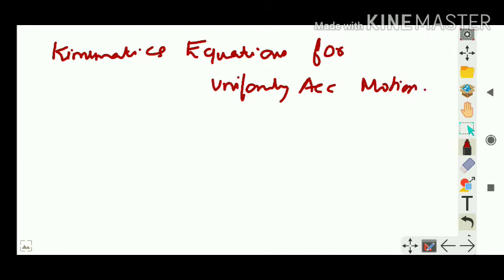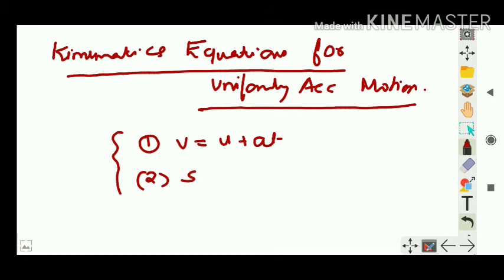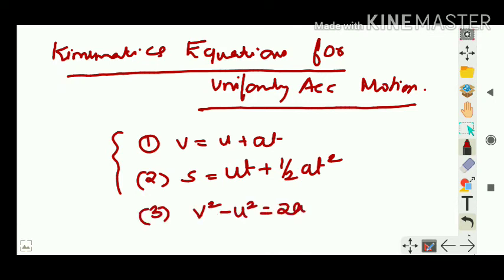This heading might be new for you but the contents are something you learned earlier. Remember the three equations of motion: the first was v = u + at, the second was s = ut + ½at², and the third was v² - u² = 2as. These three equations are what we call kinematic equations, and they apply only to bodies having uniform acceleration.